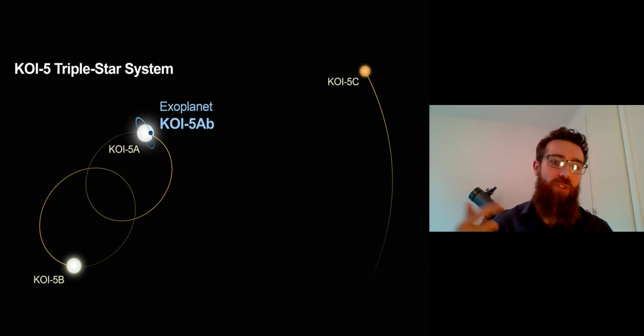So that goes around the star on a fairly close orbit, and then you've got the two central stars, 5A and 5B, orbiting a common center of mass, and then you've got this outer star 5C which is orbiting around the outside of all of them. It's an interesting system.